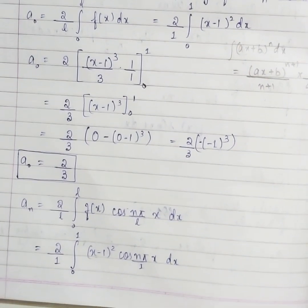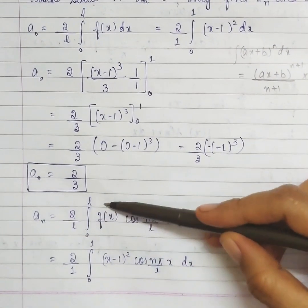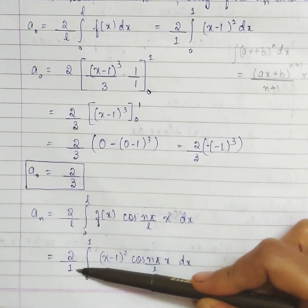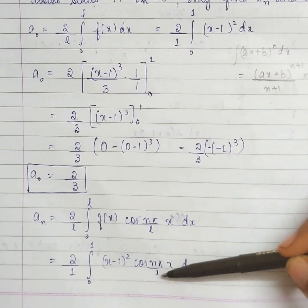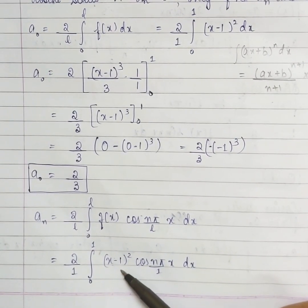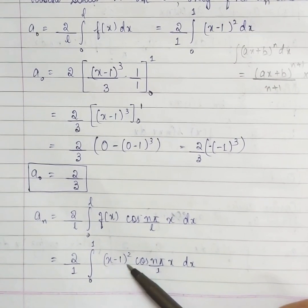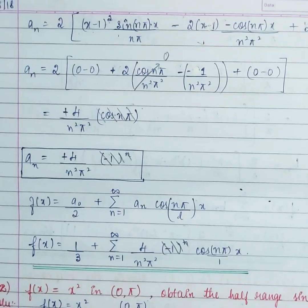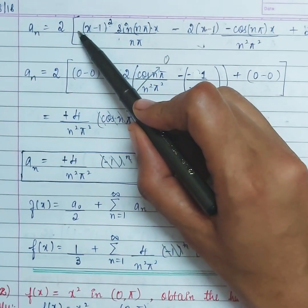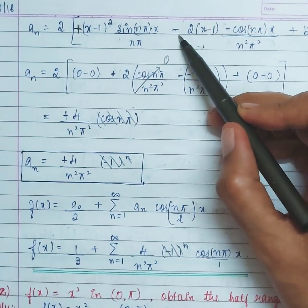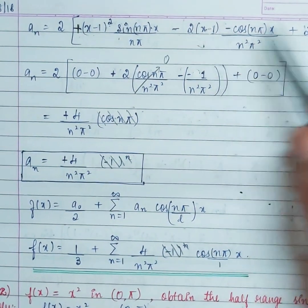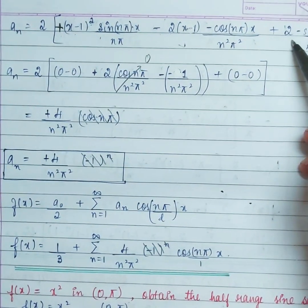Now we have AN. The formula is 2/L · integral from 0 to L of f(x)·cos(nπx/L) dx. With f(x) = (x-1)² and L = 1, this is 2/1 · integral from 0 to 1 of (x-1)²·cos(nπx) dx. These two terms are in multiplication, so we solve by Bernoulli's method. The term that vanishes after differentiation is u = (x-1)². Differentiating: (x-1)², then 2(x-1), then 2. Integration side: cos(nπx) integrates to sin(nπx)/nπ, then sin integrates to -cos(nπx)/n²π², then cos integrates to sin(nπx)/n³π³.